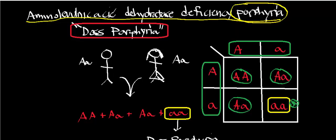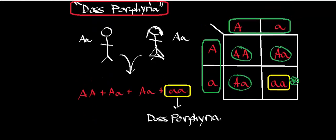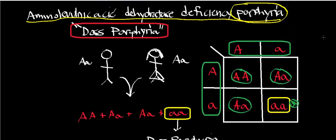With this condition, you end up getting accumulation of aminolevulinate. You get serious skin conditions — you can't be exposed to the sun, and you get blistering and scarring. You also get things like nausea, vomiting, and constipation. That is what we call a deficiency of delta-aminolevulinic acid dehydratase, or porphobilinogen synthase — aminolevulinic acid dehydratase deficiency porphyria, or doss porphyria.